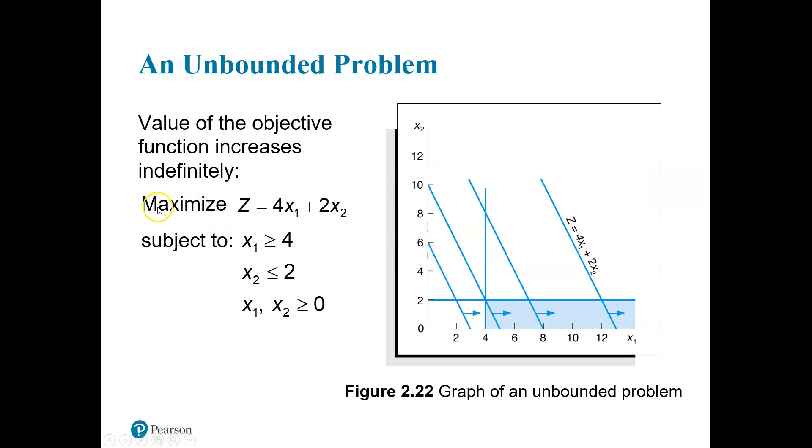Unbounded problem. Once again, this is a maximization problem. We want to get as far out from the origin as possible. There's two constraints here just to illustrate that this problem just does not have a boundary. It's limitless. x1 has to be greater than 4. So they've drawn x1 here has to be greater than 4. Everything in this blue shaded region is feasible. x2 has to be less than 2. It's showing that this horizontal line going across has to be less than 2.